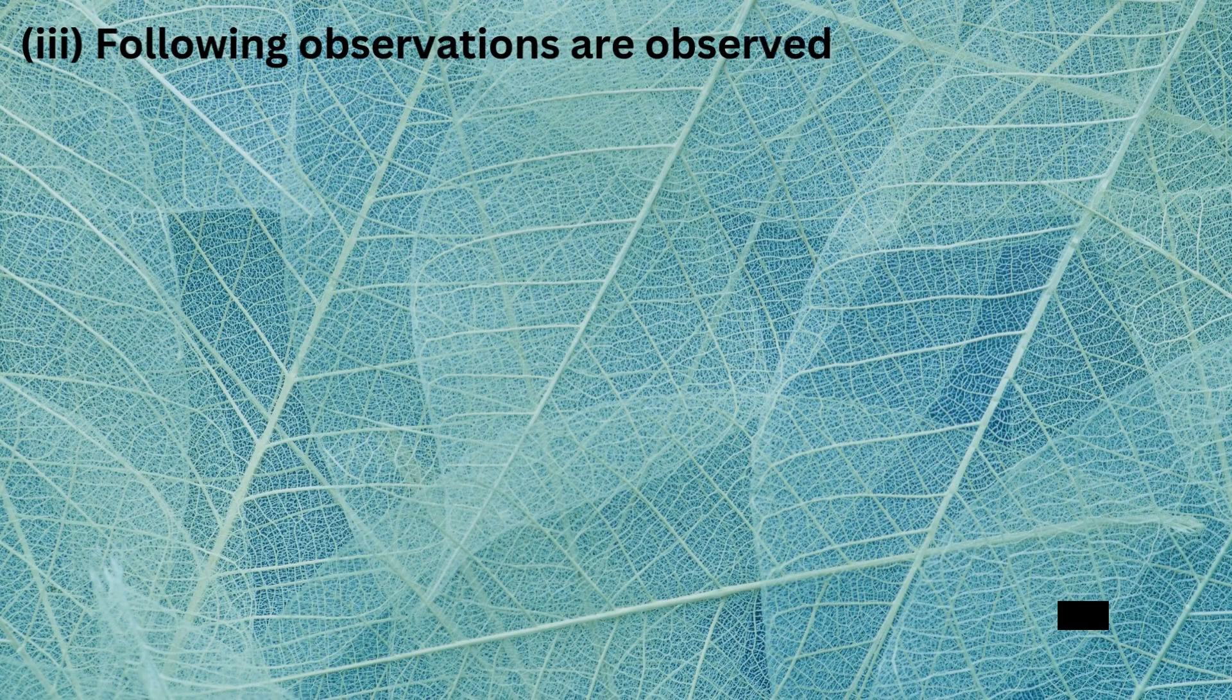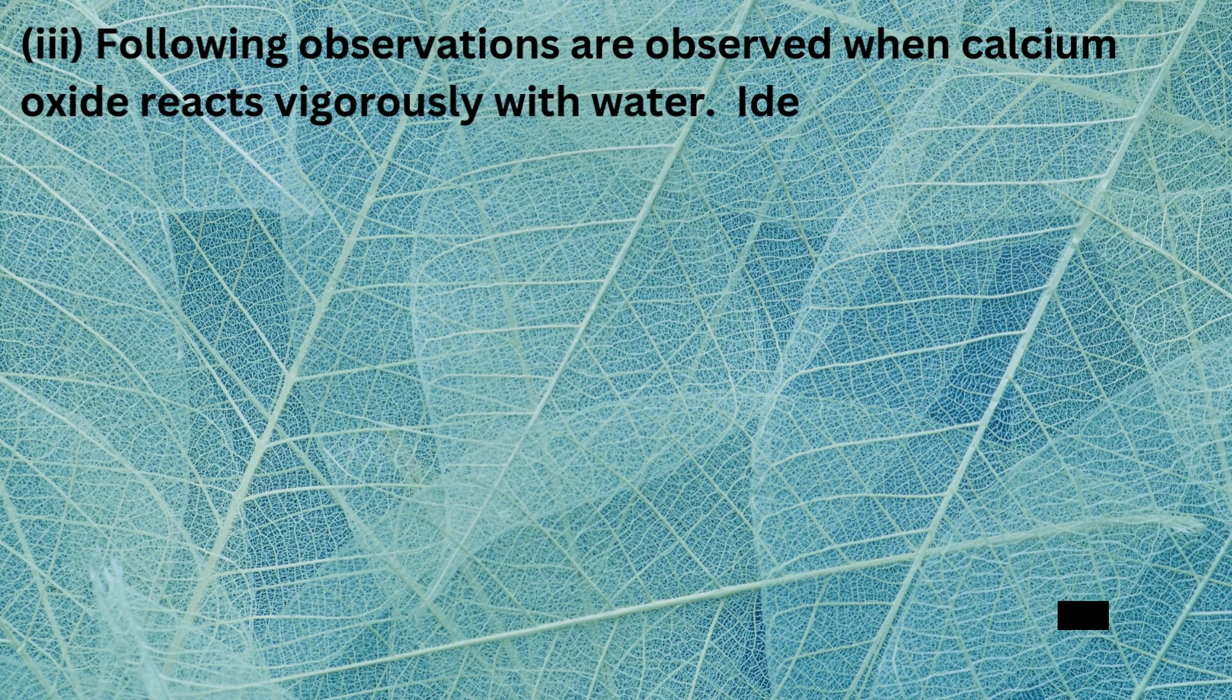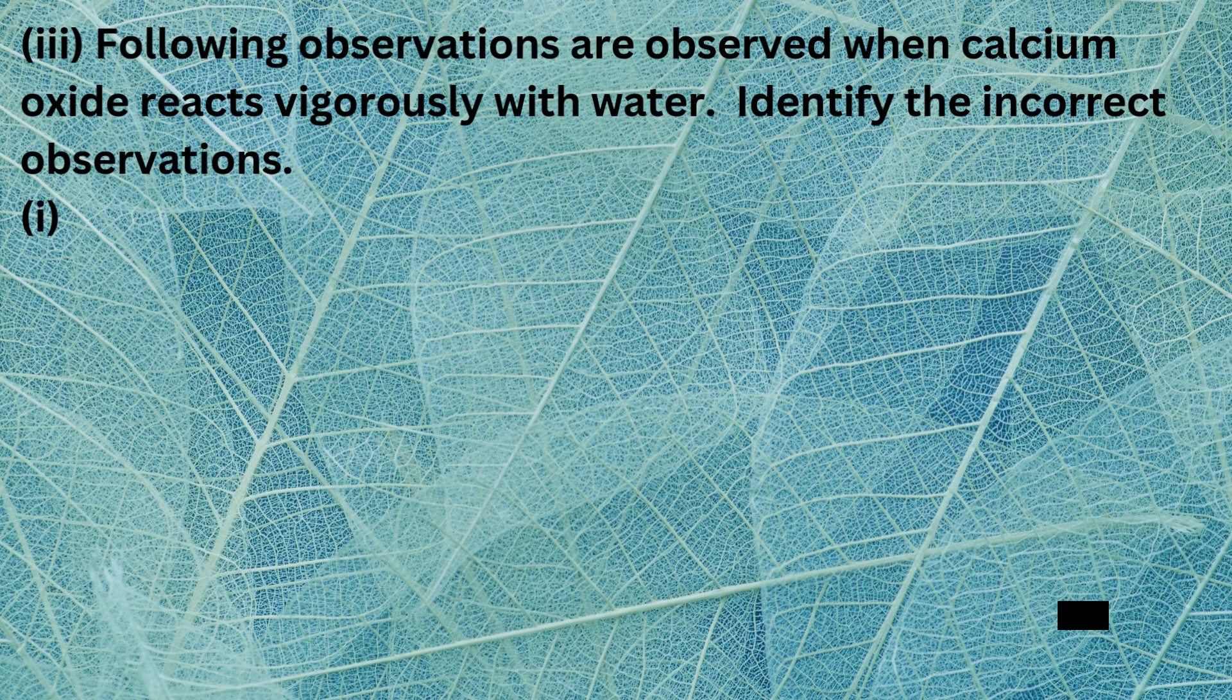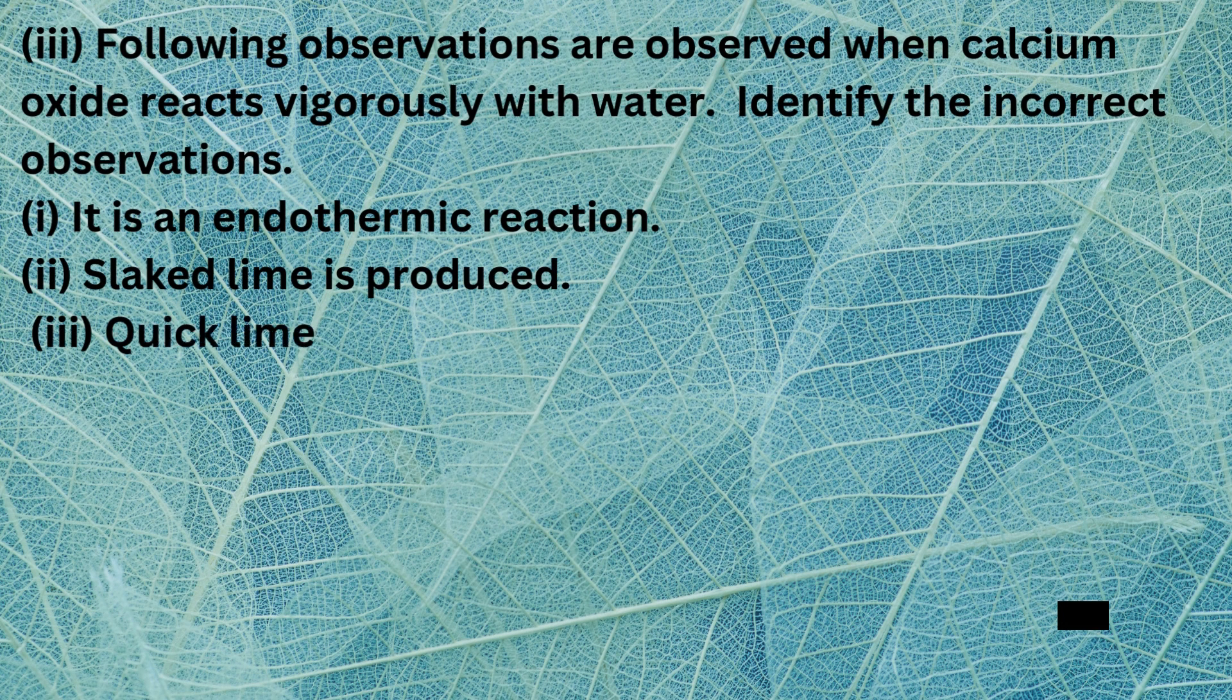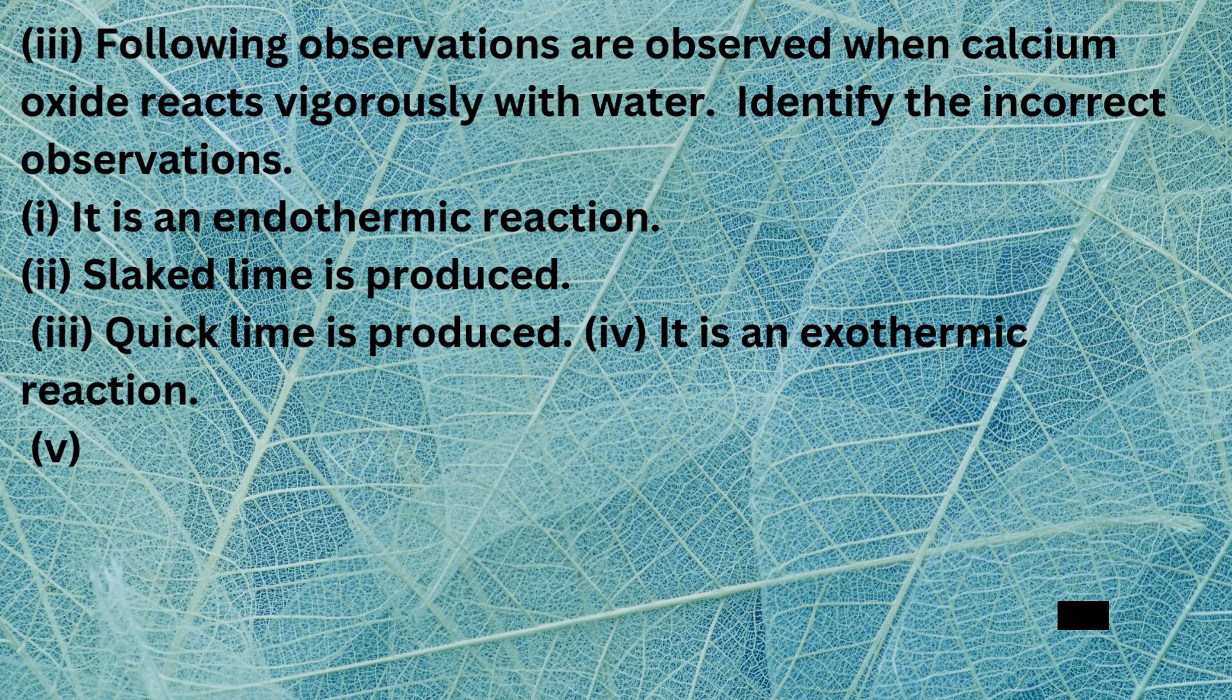Question 3: Following observations are observed when calcium oxide reacts vigorously with water. Identify the incorrect observations. 1. It is an endothermic reaction, 2. Slaked lime is produced, 3. Quick lime is produced, 4. It is an exothermic reaction, 5. It is a combination reaction.